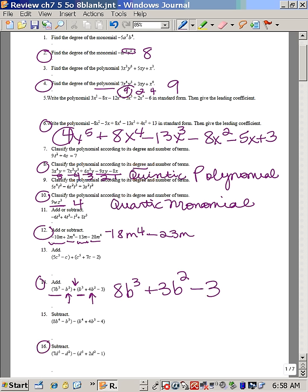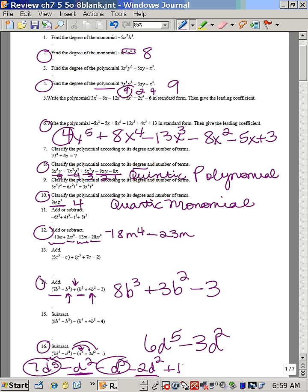Number 16, this time I have to subtract. In order to subtract, I'm going to keep the first polynomial the same, and that would be 7 d to the fifth minus d squared. I'm going to change the sign on each of these. So that's going to be minus d to the fifth minus 2 d squared and plus 1. Don't forget to do every single term. Now combining like terms, I have 7 d to the fifth, take away a d to the fifth, which is 6 d to the fifth. Then I have a negative d squared and another negative 2 d squared. That makes minus 3 d squared and plus 1.